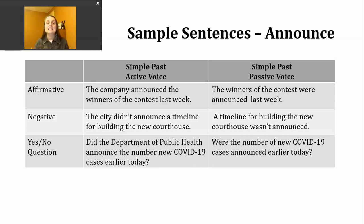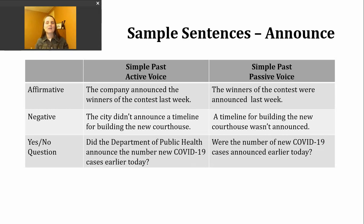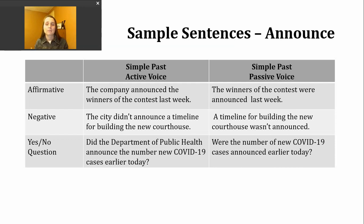Finally, let's look at making yes or no questions in the simple past tense. In the active voice, I start with did, then the subject, then the base verb. Here is an example: Did the Department of Public Health announce the number of new COVID-19 cases earlier today? If it's implied that the public health department is communicating this information, I could use the passive voice — starting with was or were, then the object receiving the action, followed by the participle form: Were the number of new COVID-19 cases announced earlier today?